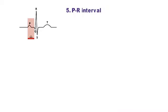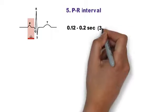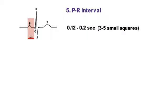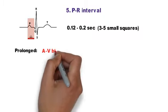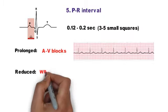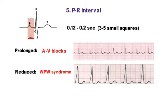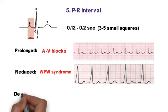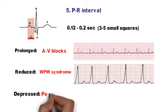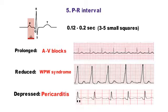Step 5 is PR interval, measured from the start of the P-wave to the start of the Q-wave — sometimes called the PQ interval. Normally it is 0.12 to 0.2 seconds (3 to 5 small squares). It is prolonged in AV blocks, reduced in WPW syndrome due to an accessory pathway that conducts impulses faster, and depressed in pericarditis.